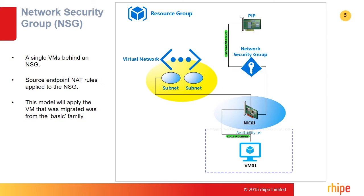In the case of the basic family of virtual machines, an NSG — a network security group — is created, along with the same endpoint NAT rules and a dynamically assigned PIP (public IP address). If there are more than one virtual machine behind a cloud service which is set to the basic family, then all virtual machines behind this cloud service are migrated together but without a load balancer, using an NSG network security group instead to keep the existing endpoint NAT rules in place.